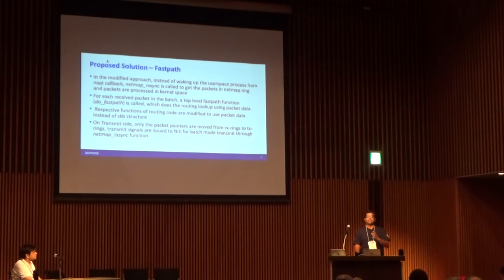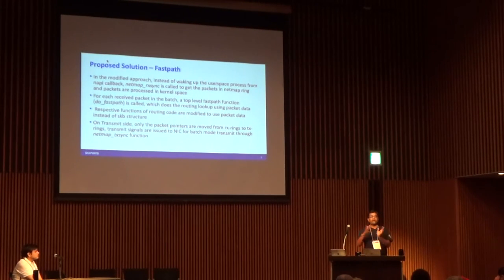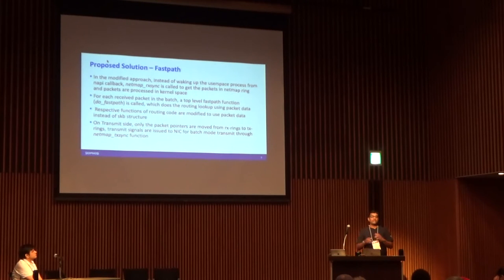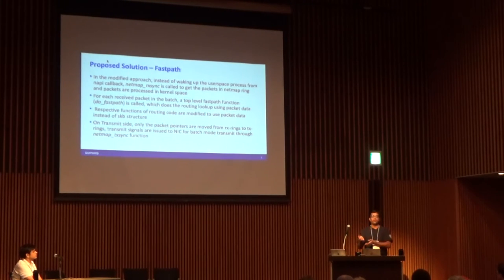But that broke many things in the TCP stack. So instead we created a small structure with only the fields required for forwarding — like routing DST cache entries, conntrack pointers, and other things — and changed the code to extract those fields from SKB and use the same code. Logically, there is no change in the actual routing code.